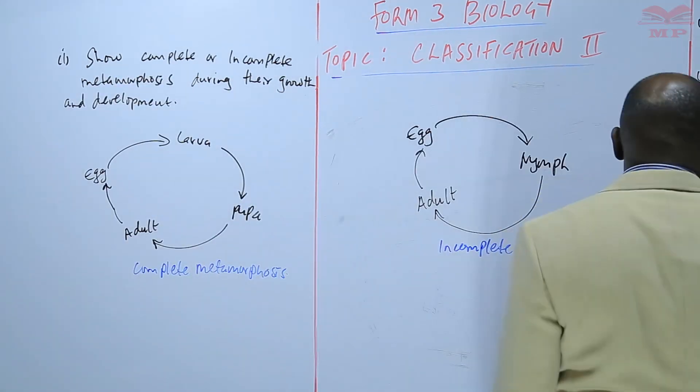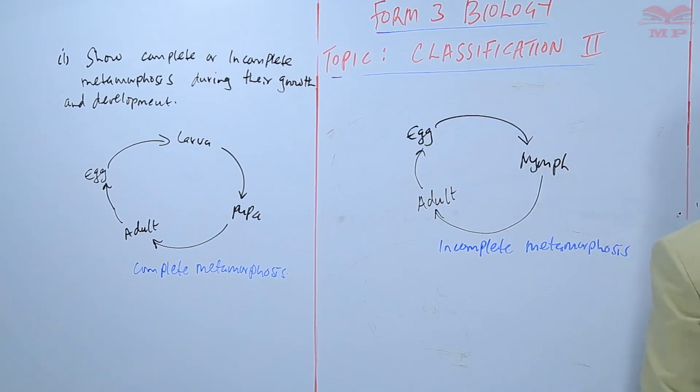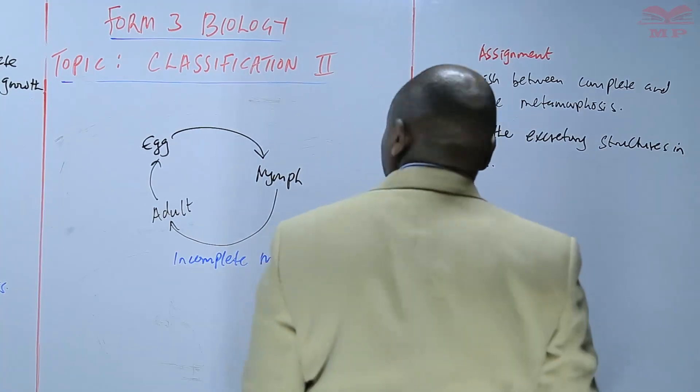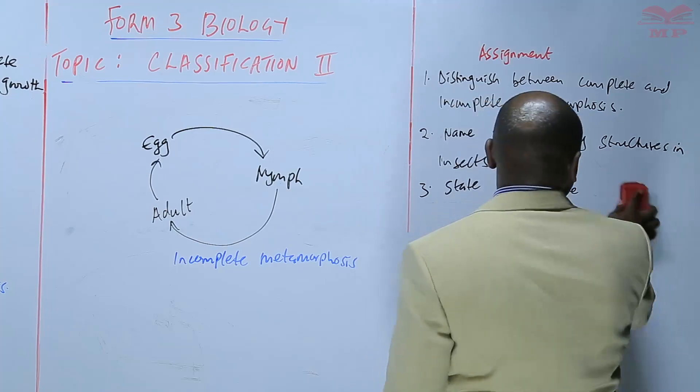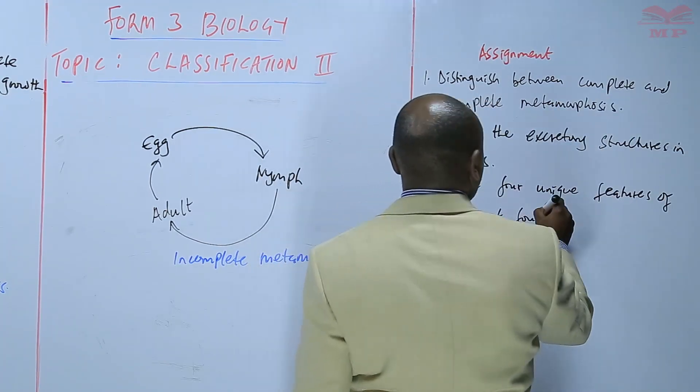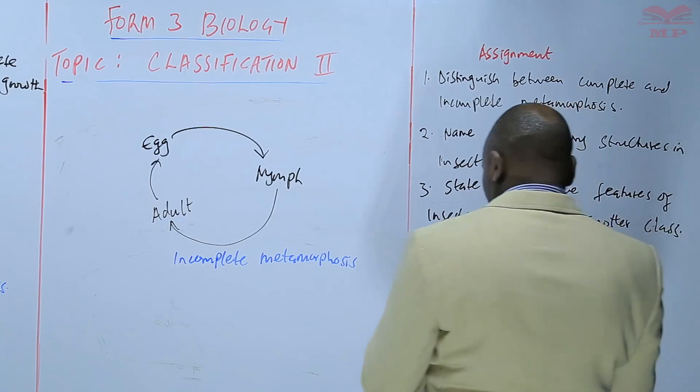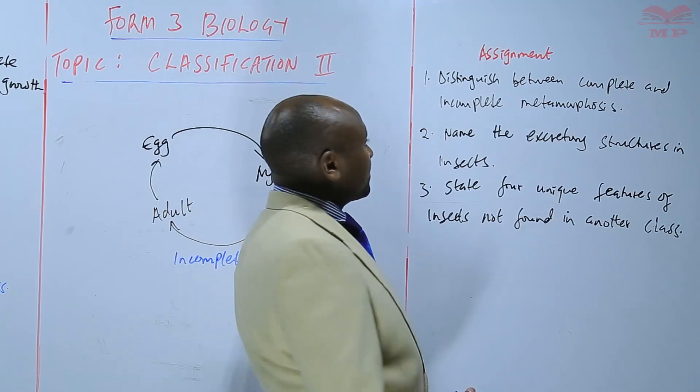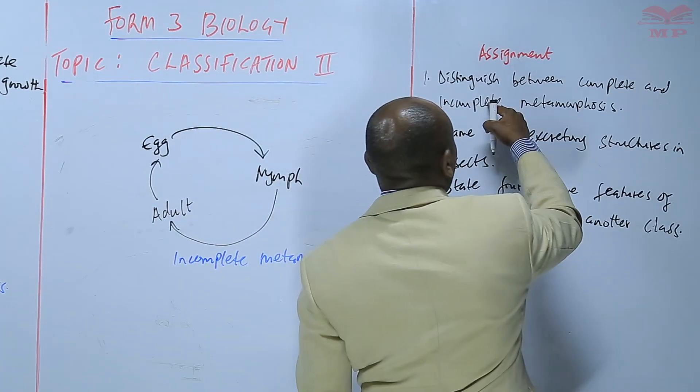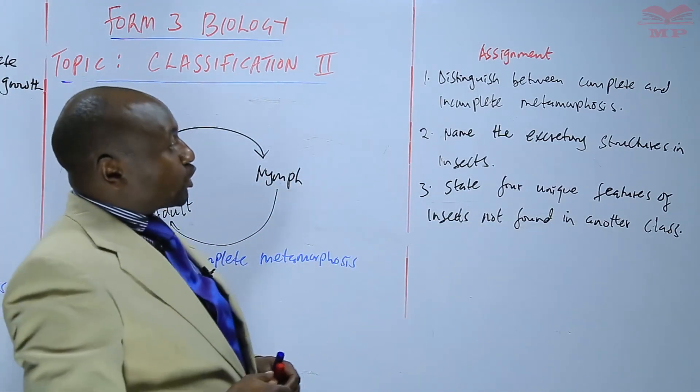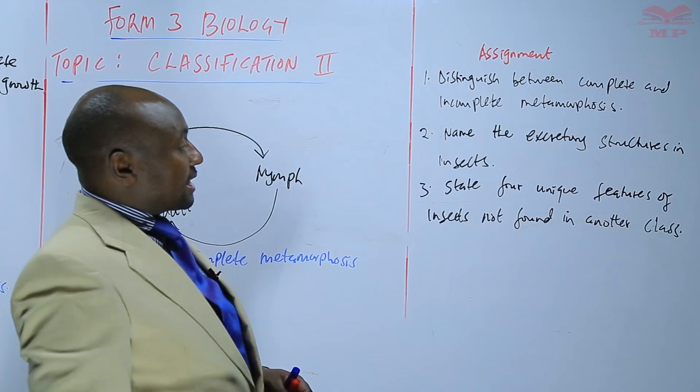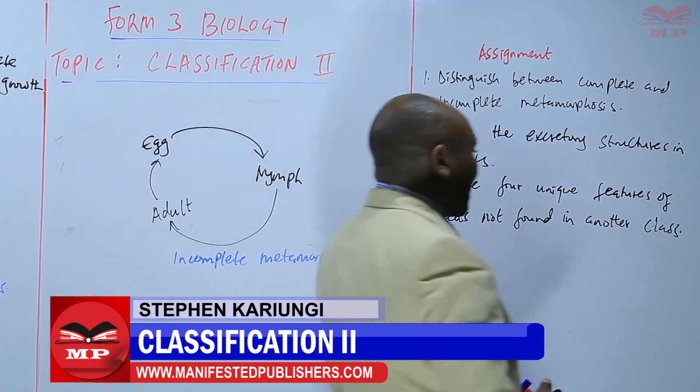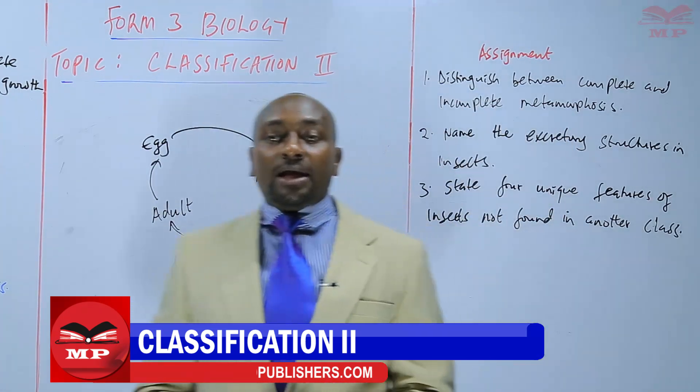So we'll have an assignment. The first question: distinguish between complete and incomplete metamorphosis. Number two: name the excretory structures in insects. And number three, lastly: state four unique features of insects not found in another class. So we are going to stop there. Until next time, goodbye.